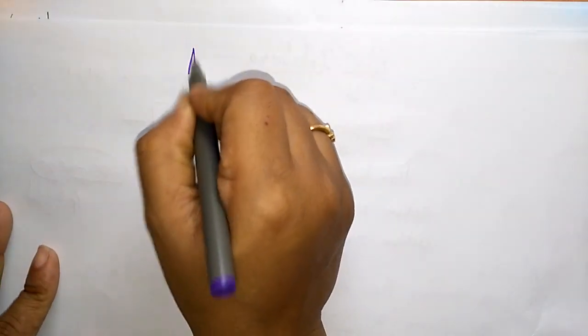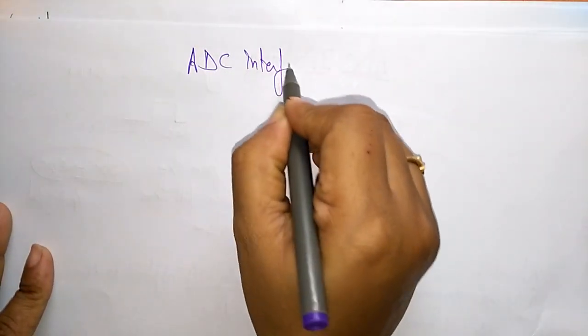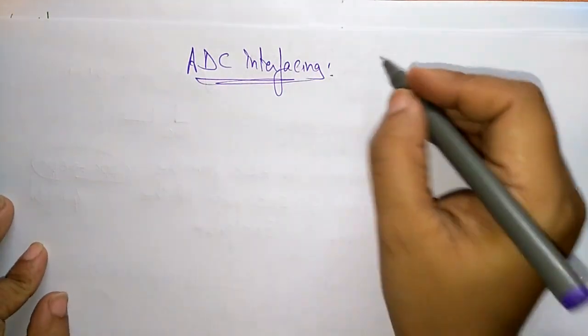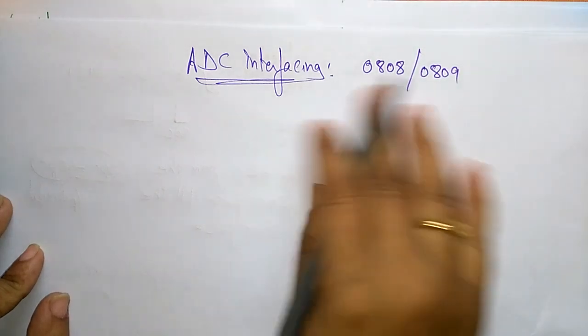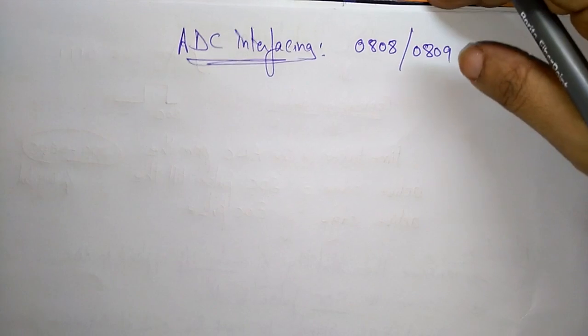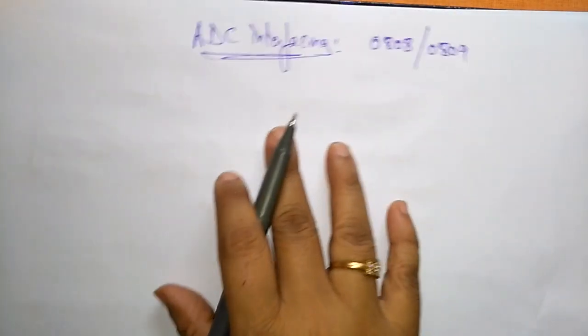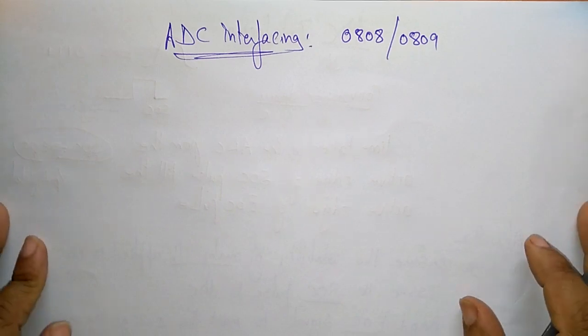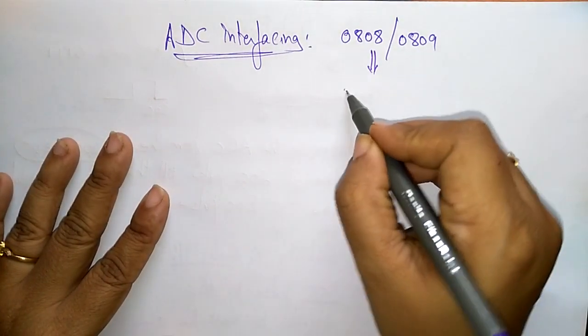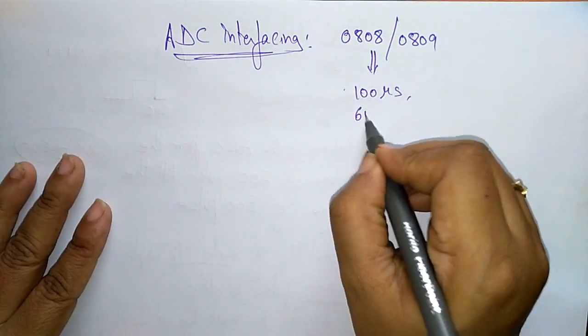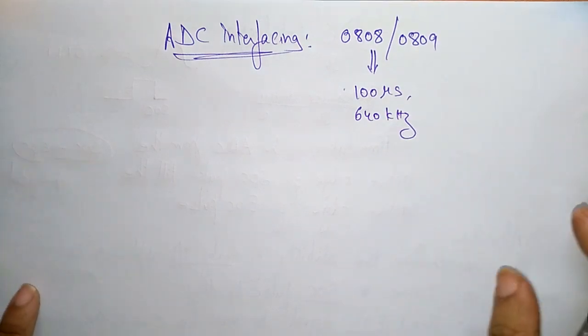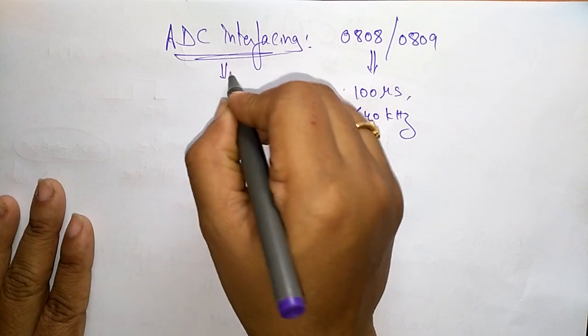Let us continue with the concept of analog to digital conversion, ADC interfacing. Here we have taken the ADC as 0808 or 0809. This chip converts the analog signal to digital signal. The conversion delay for this chip is around 100 microseconds, and the frequency is 640 kilohertz. It is a 28-pin DIP.